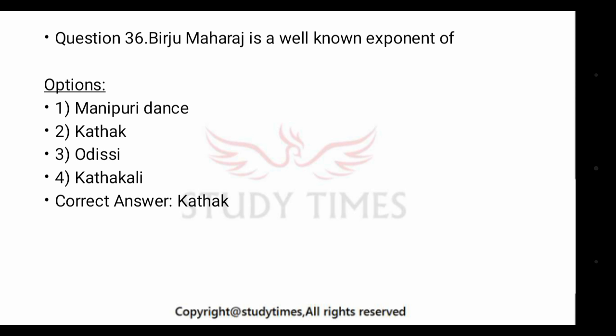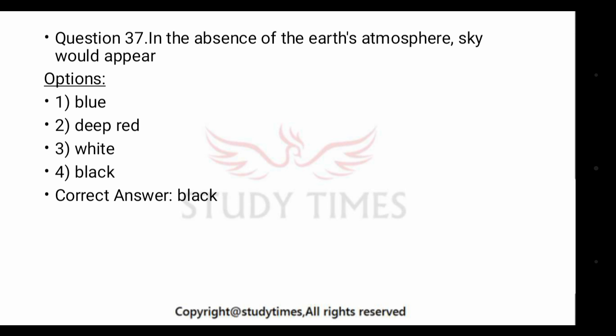In the absence of atmosphere, the sky would appear — the answer is black. The reason is that the color of sky appears black in the absence of atmosphere because it is the particles in the atmosphere that are responsible for scattering white light coming from the sun, making the color blue visible. Without atmosphere there are no particles to scatter light, thus making the sky look dark.